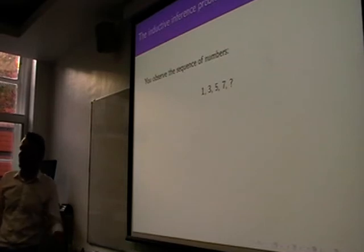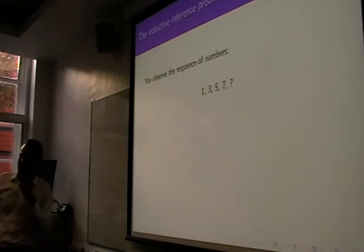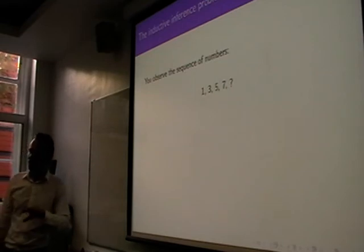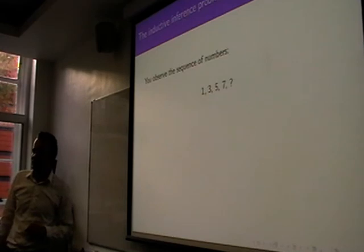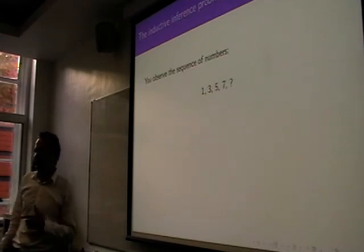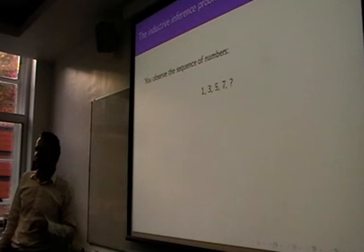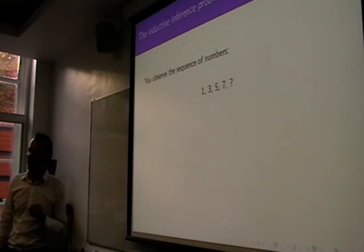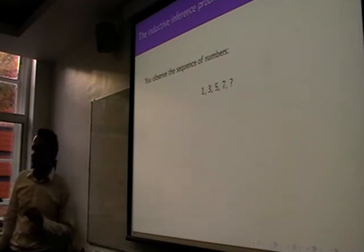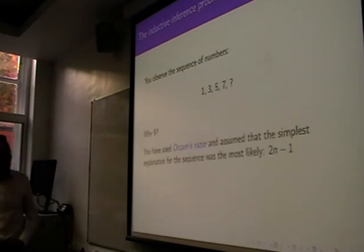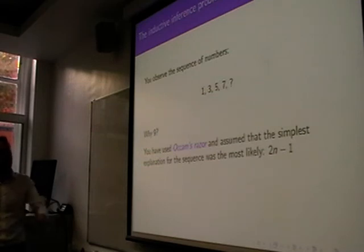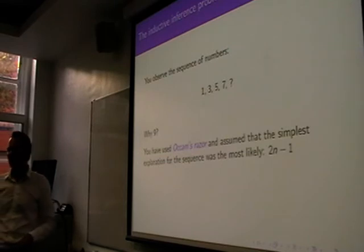In intelligence tests they expect you to use Occam's razor. They'll give you sequences, and you could invent some complicated explanation, but they design it so there is a significantly simpler explanation which gives you the quote-unquote right answer. Even in intelligence tests they expect you to use Occam's razor. The answer is nine because you've used Occam's razor, and the simplest explanation is 2n minus 1. Okay, now you're all wrong.